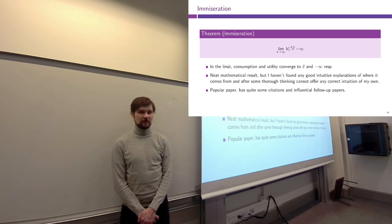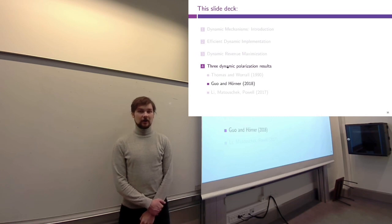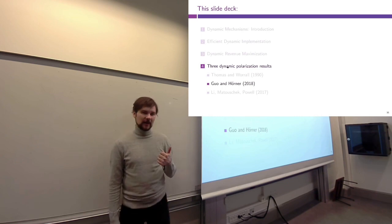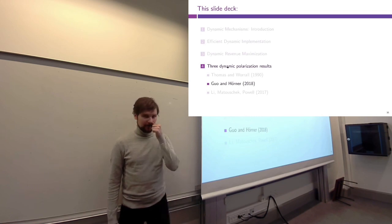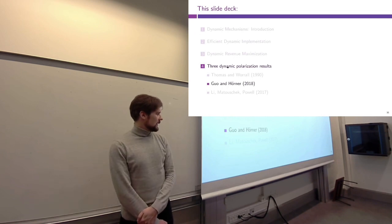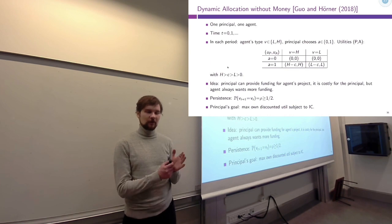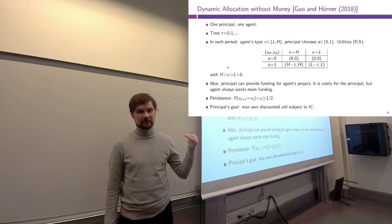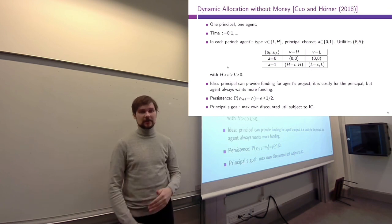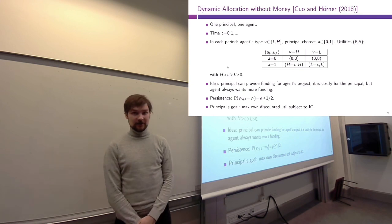So I'll just state it and move to the next paper. This second paper is in a sense a mirror opposite of the first. In Thomas and Worrell we only had access to transfers in any given period and used promises of future utility to provide incentives. In this next paper by Guo and Hörner, we have the opposite situation: we only have access to allocations in any given period but cannot use transfers to provide contemporaneous incentives, and therefore must resort to promises of future utility as our incentive provision instrument once again.